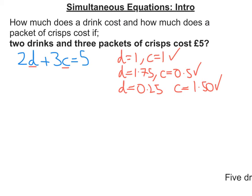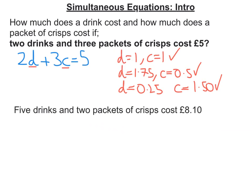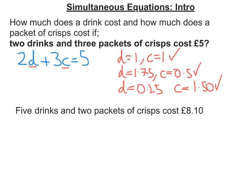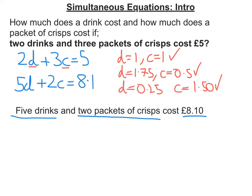So I'm going to need a little bit more information to work out exactly what the cost of a drink and a packet of crisps is here. Here's the other information we've got: five drinks and two packets of crisps cost £8.10. So now I'm going to write that as an equation: 5D plus 2C equals 8.1.